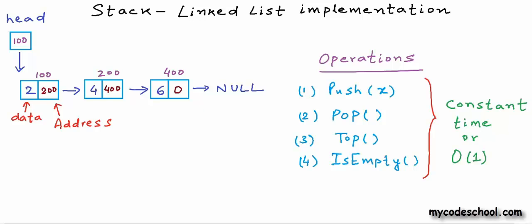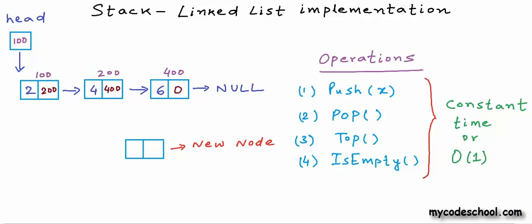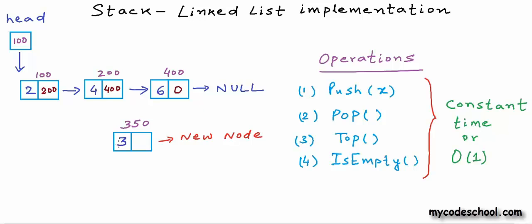We already know how to create a linked list or insert and delete elements from a linked list from our previous lessons — I'm just doing a quick recap here. To insert an element in a linked list, we first create a new node, which is basically blocking some part of memory to store our data. In this example, let's say for my new node I'm getting address 350. We set the data part and then modify the address field of some existing nodes to link this node into the actual list. For a stack, we want insertion and deletion to always happen from the same end.